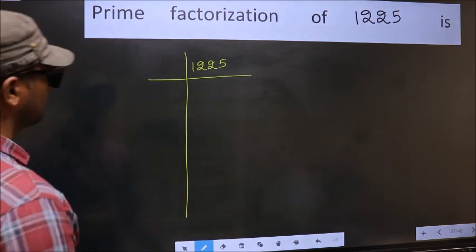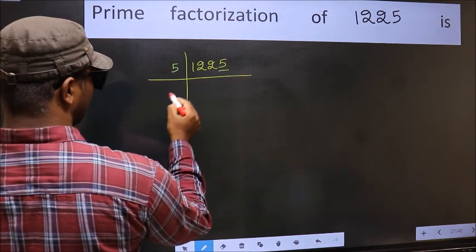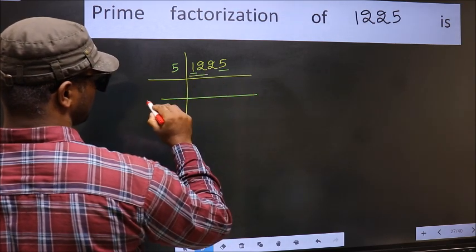Next, in this number, the last digit is 5, so directly take 5. First number 1 is smaller than 5, so take 2 numbers, 12. A number close to 12 in the 5 table is 5 times 10.